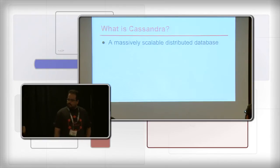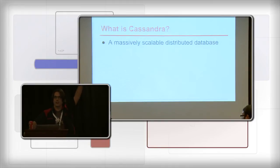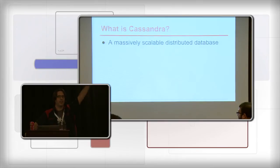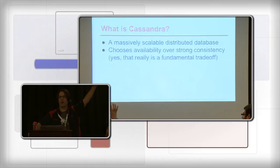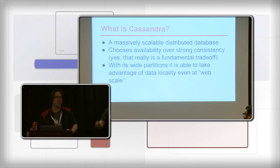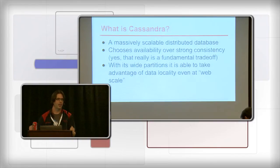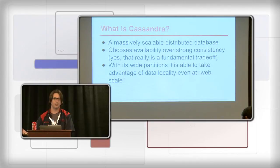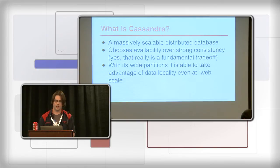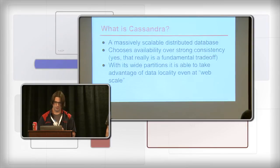How many people here are running Cassandra in production? How many people are messing with it in the lab? Awesome. How many people are going to mess with it in the lab soon? More, more. Thank you. So, Cassandra has actually a pretty long heritage going back to the Amazon Dynamo paper and the Google BigTable papers. The simplest way to describe it is that they had a love child, and that's Cassandra — the data model comes from the BigTable lineage, the availability model comes from Dynamo. There's no single point of failure. Every node is equal.